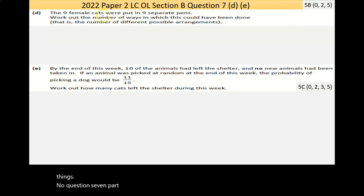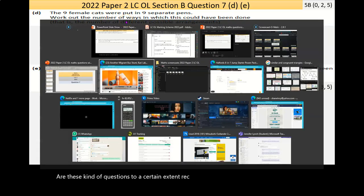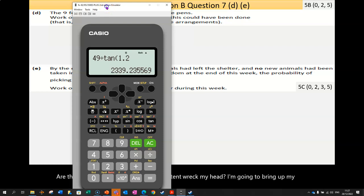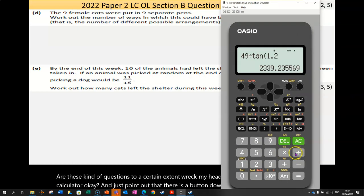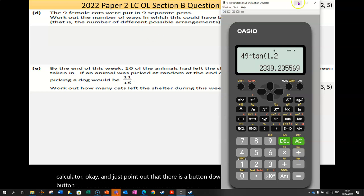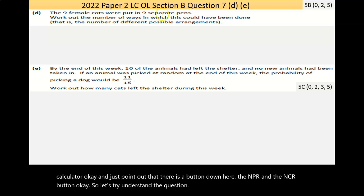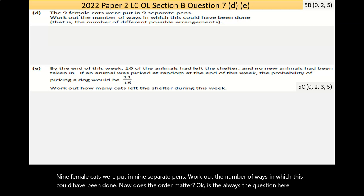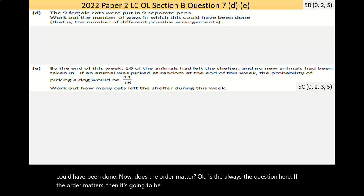Now, question 7, part D here says, the nine female cats were put in nine separate pens. Work out the number of ways in which this could have been done. That is, the number of different possible arrangements. Now, these kind of questions, to a certain extent, wreck my head. I'm going to bring up my calculator and just point out that there is a button down here, the NPR and the NCR button. So let's try to understand the question. Nine female cats were put in nine separate pens. Work out the number of ways in which this could have been done. Now, does the order matter? Is always the question here. If the order matters, then it's going to be a permutation. If it doesn't matter, it's going to be a combination.